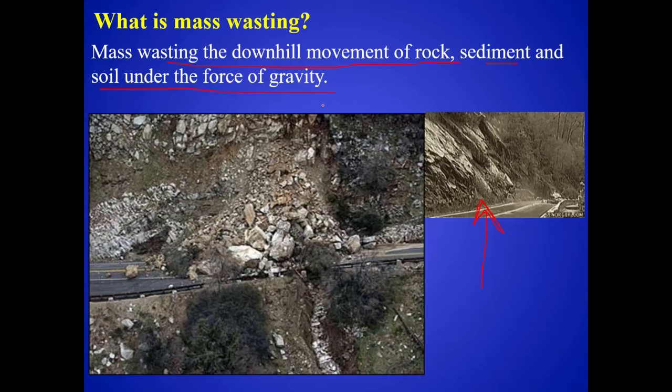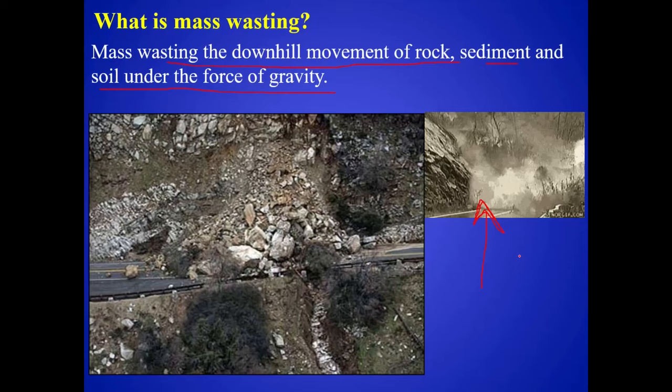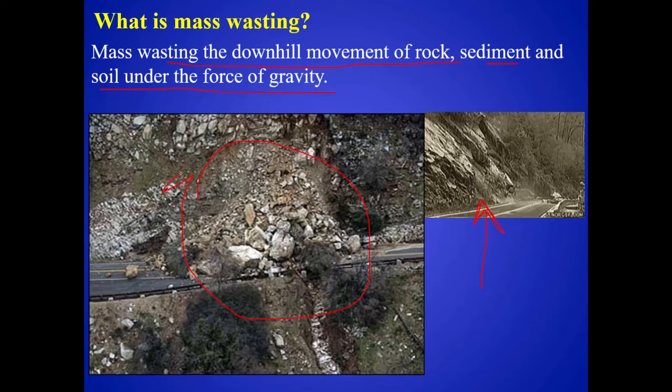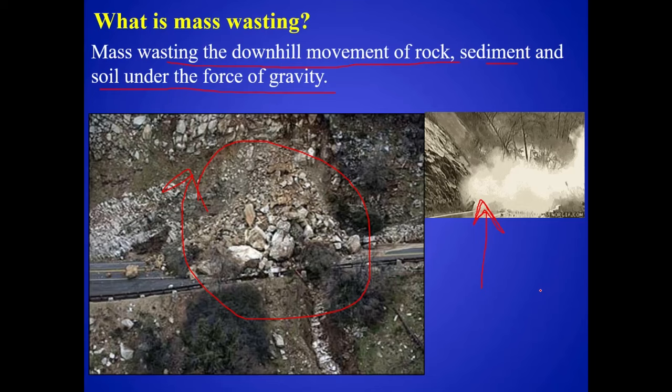In the last lecture on sediment and weathering, you learned how material gets eroded and moved by ice, wind, and water. But in this case, it's just gravity that's moving the material. Any process that moves sand, sediment, rocks, and soil, we call that mass wasting.